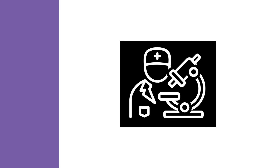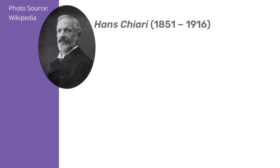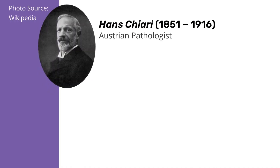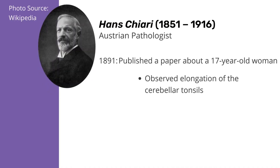Chiari, like many medical diseases and disorders, was named after the person who first described it, which in this case was Hans Chiari, an Austrian pathologist. In 1891, more than 130 years ago, Chiari published a paper describing the case of a 17-year-old woman in whom he observed, after she died from typhoid fever,